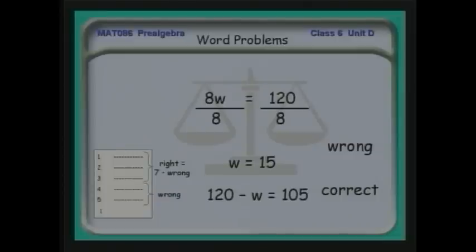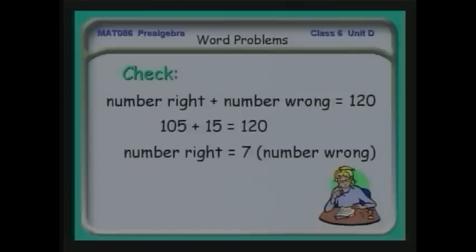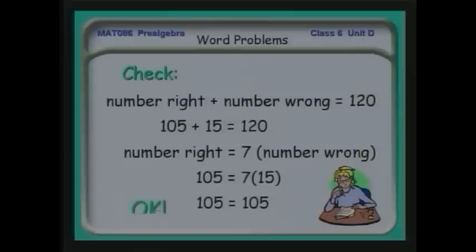I got 15 wrong out of 120 and 105 right. Checking: 105 plus 15 equals 120. And is 105 equal to 7 times 15? Yes, it is. Both facts used to establish the answer check out correctly, so I'm confident I solved this word problem correctly.